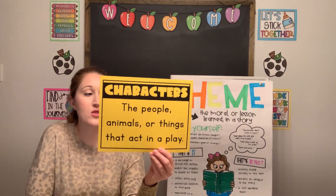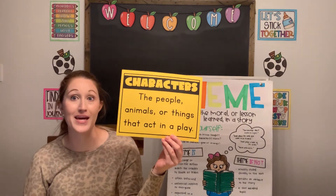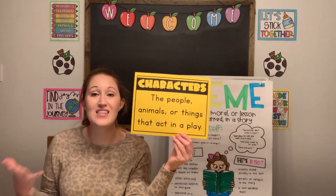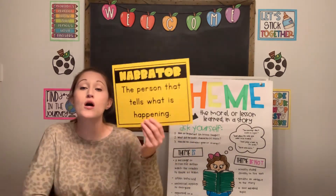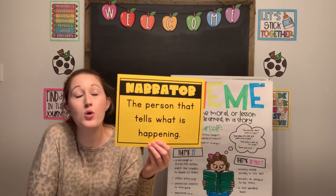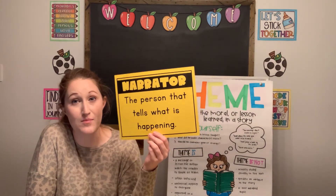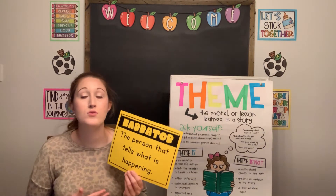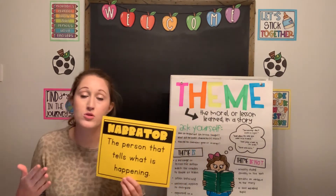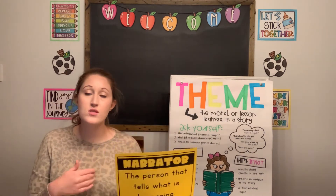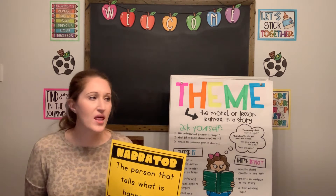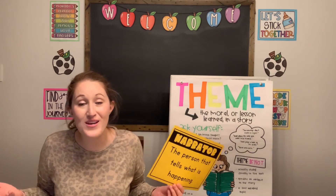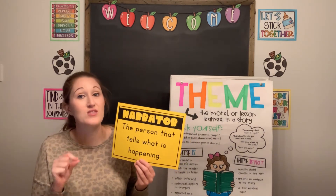We also have characters — those are the people, animals, or things that act in a play. They're the most important thing when it comes to plays; they're the characters that we fall in love with. We also have narrators — those are the person or people who tell what is happening. They're kind of off to the side and tell you what's going on. They might come in between scenes to give background information, filling in time gaps that we would normally miss.